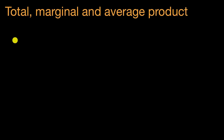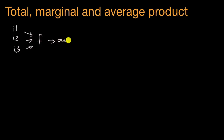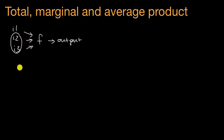In previous videos, we introduced the idea of a production function that takes in a bunch of inputs — input one, input two, input three — and that based on how much of these various inputs you have, your production function can give you your output. In this video, we're going to constrain all of the inputs but one to see how our output varies as a function of one input. As we do that, we're going to understand total product, marginal product, and average product.